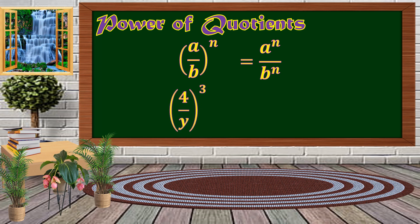For example, we have the quantity 4 over y, raised to 3. Distribute the exponent: 4 raised to 3 over y raised to 3. Simplifying, 4 times 4 times 4 is 64, giving us 64 over y cubed. That is the Power of Quotients.